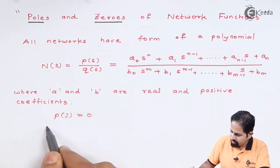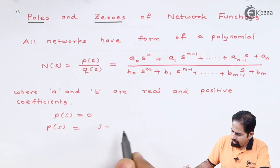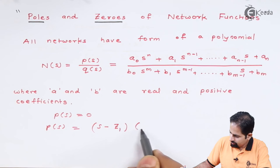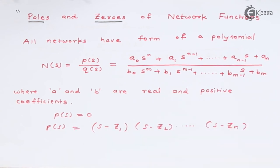So you can write this P(s) as (s - z₁)... And now you can say that whenever this s takes values which are exactly equal to z₁ or z₂ or zₙ, this P(s) will become 0. That means this numerator will become 0.